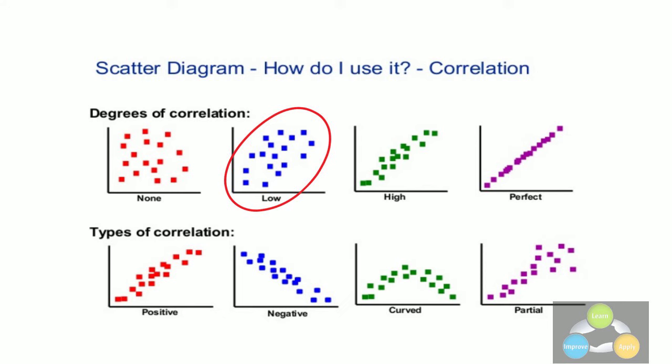Relationship between the variables can be of four types. Positive correlation. It means there is an increase in level of one variable after increase in level of another variable. Second, negative correlation. There is a decrease in level of one variable after increase in level of another variable.